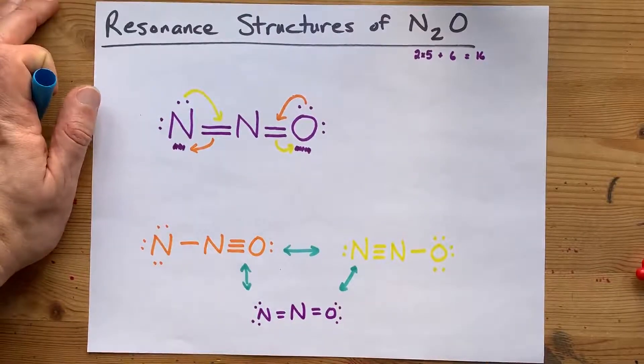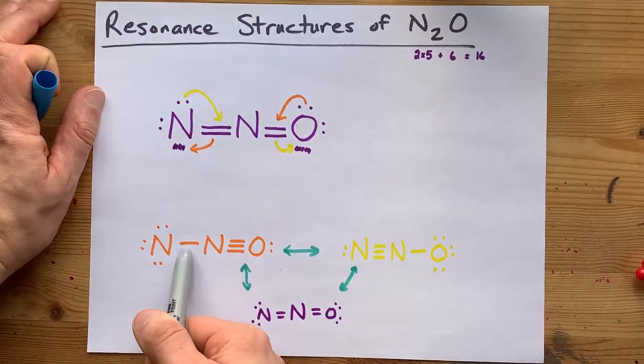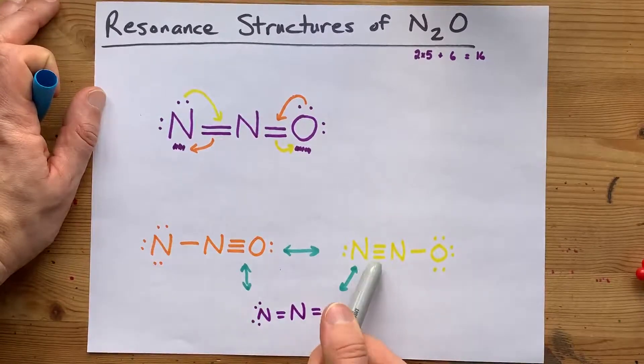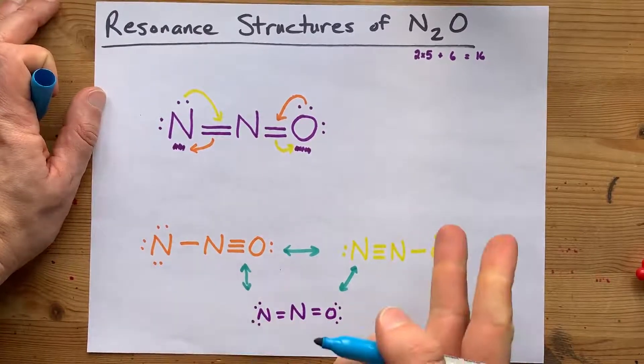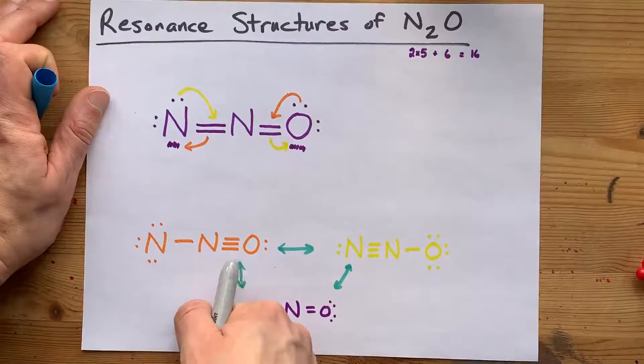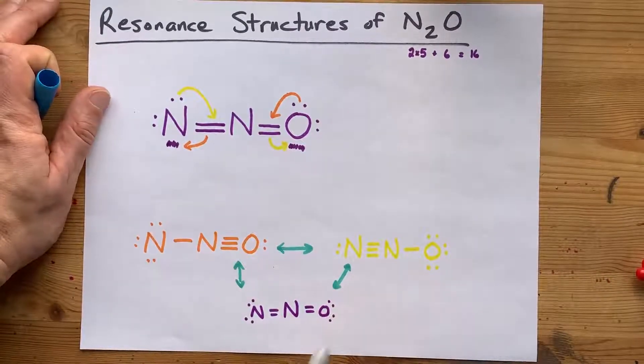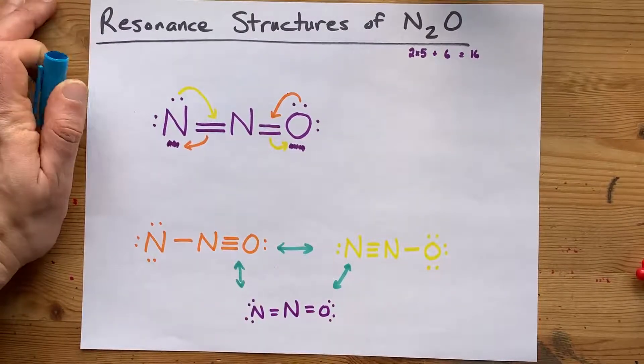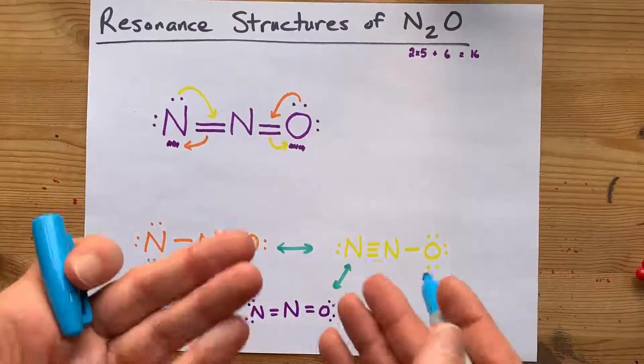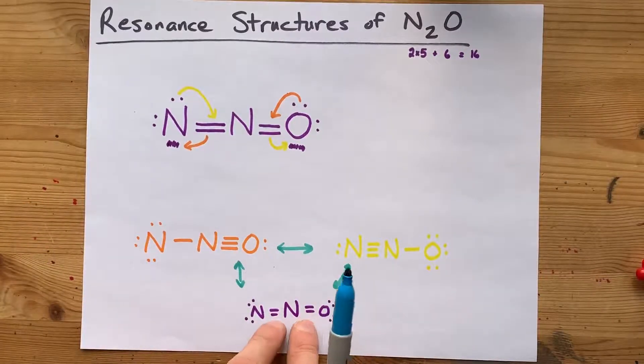And what I notice is that this single bond, this double bond, and this triple bond kind of average to a double bond. This triple and double and single also kind of average to a double bond. If I was to draw my guess at a resonance hybrid, it probably would have ended up being this one.